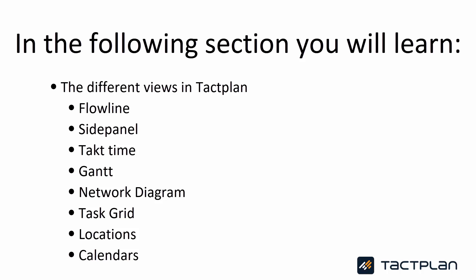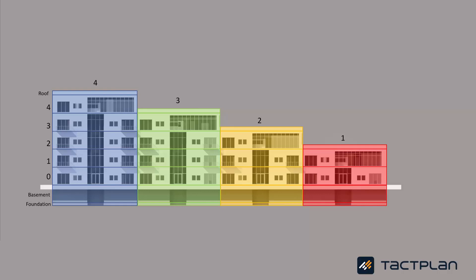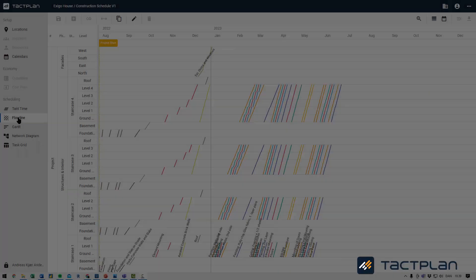The views covered are: Flowline, SitePanel, TagTime, Gantt, NetworkDiagram, TaskGrid, Locations, and Calendars. We will briefly show a completed schedule for the project Exigo House — a small residential building with four stair cases with two to four levels and a basement in each.